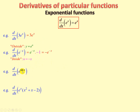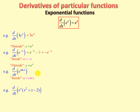Here's another composite function: e to the sin of x. The outside function is y equals e to the u, and the inside function is u equals sin of x. When we differentiate the outside function, we get e to the sin of x. The derivative of the inside function, sin of x, is cos of x. So the result is e to the sin of x times cos of x.